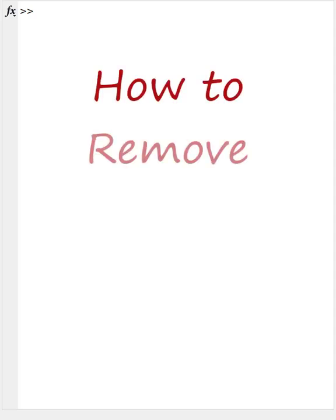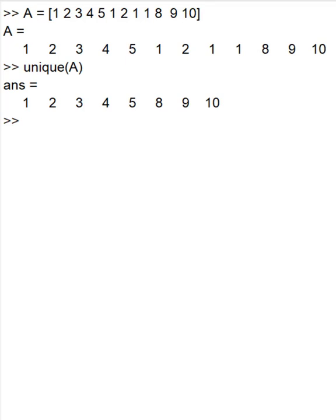How to remove duplicate values from an array? Simply use the unique function. It works for numbers, characters, and strings.